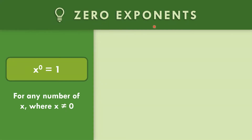Zero exponents: x to the zero is equal to one, for any number x where x is not equal to zero.